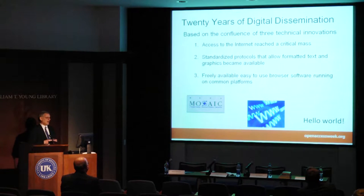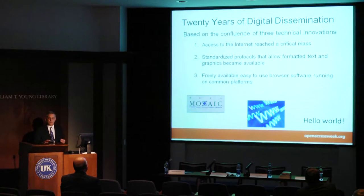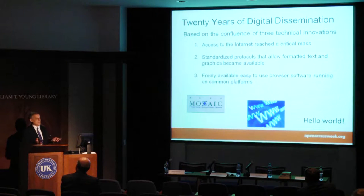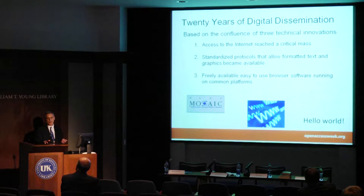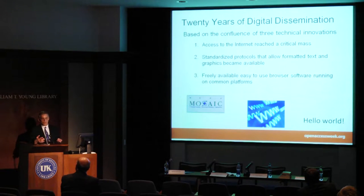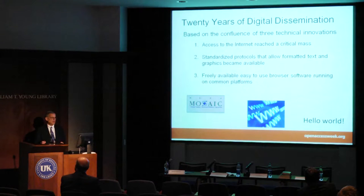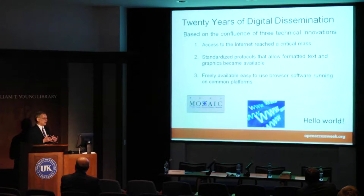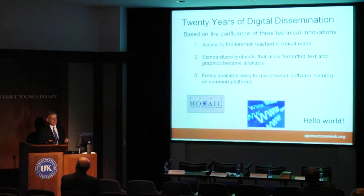About 20 years ago, digital distribution of scholarly journals became possible. There were digital journals at least as early as the early 1980s, but these were text-based. Relatively few people could access wide area networks, and they weren't a viable replacement for our paper journal system. About 20 years ago, three technological innovations came together that made it possible to distribute journals over the Internet on par with paper journals.